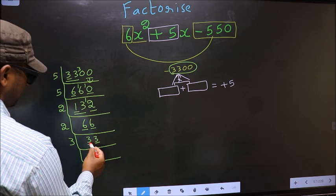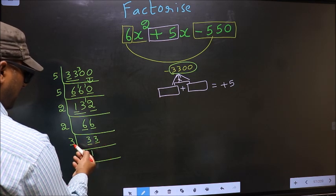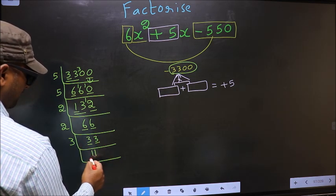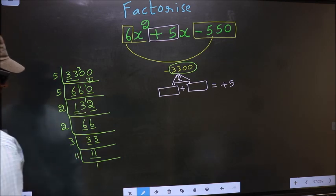The first number 3. When do we get 3 in 3 table? 3 once 3. The other number 3. When do we get 3 in 3 table? 3 once 3. Now here we have 11. 11 is a prime number, so 11 once 11.